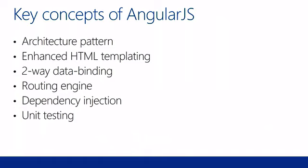There are six key concepts in AngularJS. The first one is it forces you to use an architecture pattern. It doesn't force you into a specific one, but it forces you to have an architecture pattern. This leads to better code, better code separation, better code organization in your solution, and it will be way easier to maintain.